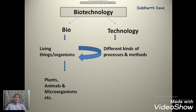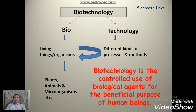तो यह biotechnology का एक simple meaning होता है। अगर आप इसके definition की बात करो तो biotechnology simply means: biotechnology is the controlled use of biological agents for the beneficial purpose of human beings. Biological agents यानि microorganisms — bacteria, viruses, algae, fungi and protozoa — तो we need to controlled use them.